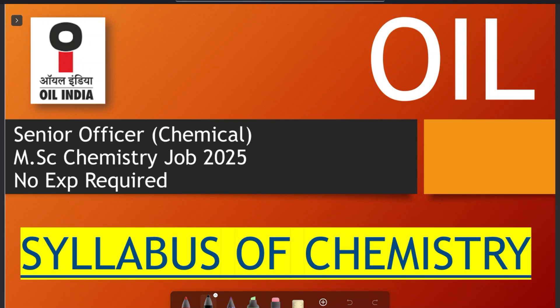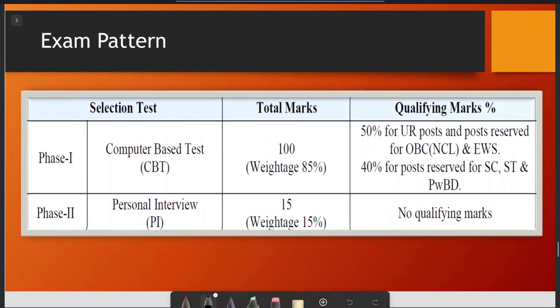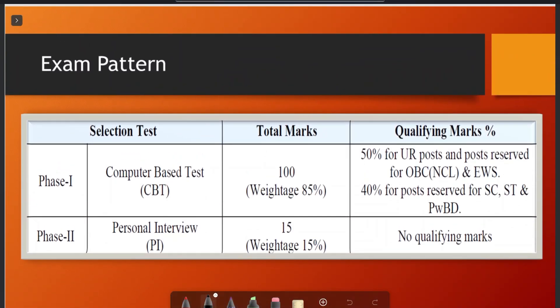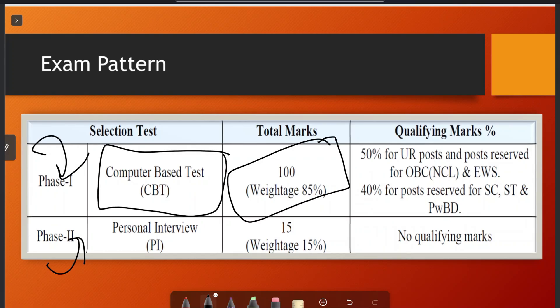Now, we will discuss chemistry syllabus and exam pattern. I have clearly mentioned that there will be two phases of exam, phase 1 and phase 2. Phase 1 is CBT based, which will be 100 marks. And there will be 100 questions, which will be 100 marks, with 85 percent weightage. And phase 2, personal interview.